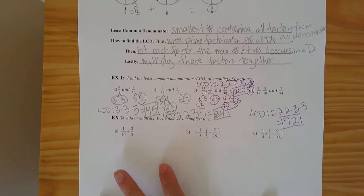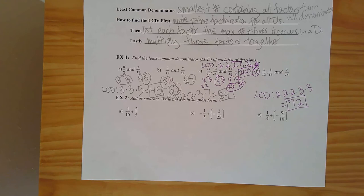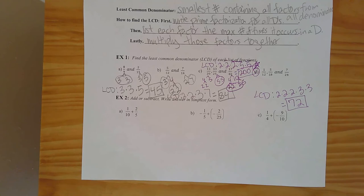Now let's actually practice adding and subtracting. To add or subtract, we need to get fractions to have the same denominator first, because otherwise they're not the same size of piece. We find the LCD, make equivalent fractions so all fractions have the same denominator, then add or subtract the numerators while the denominators stay the same, and afterwards simplify if we can.